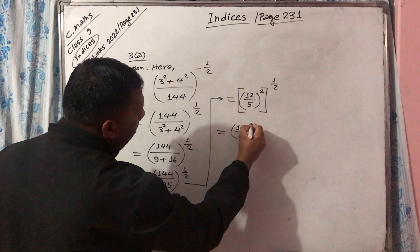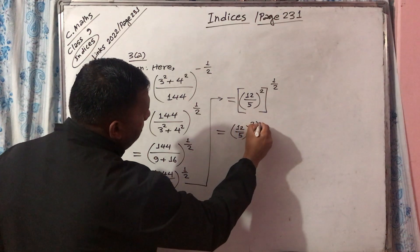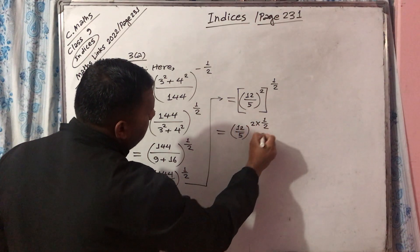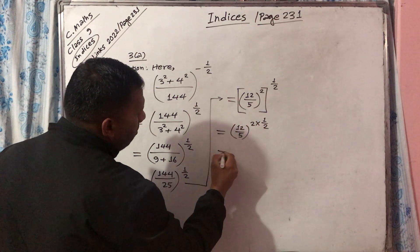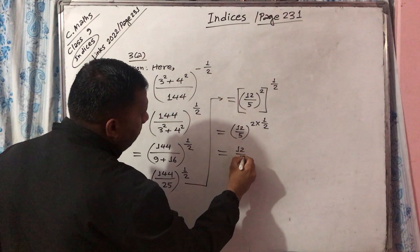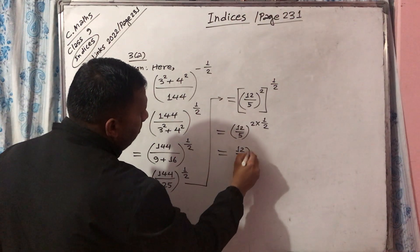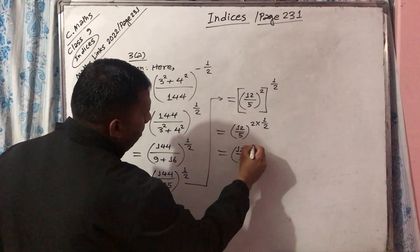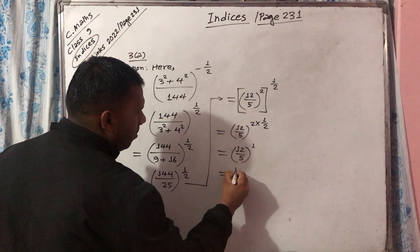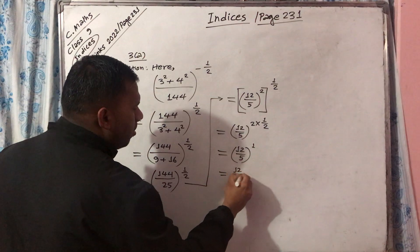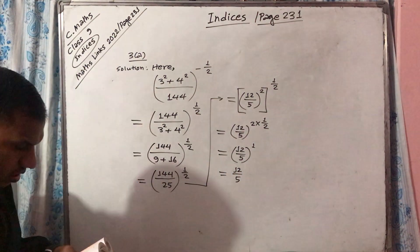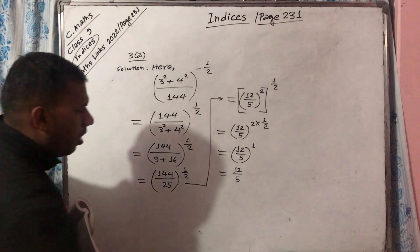We have 12 by 5 to the first power of 2, times second power of 1 by 2. The 2s cancel, so 12 by 5, whole power 1. That is 12 by 5. Okay, this is the answer.